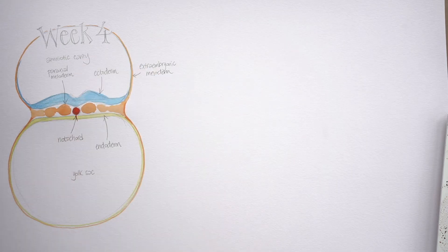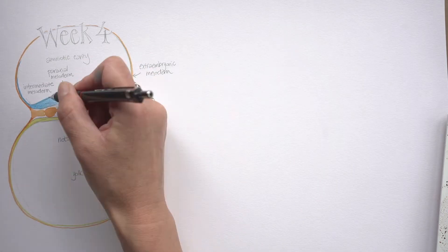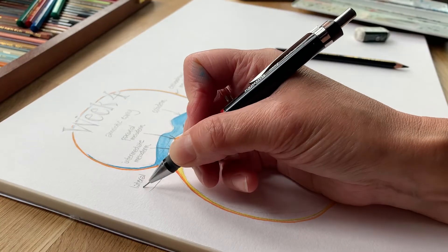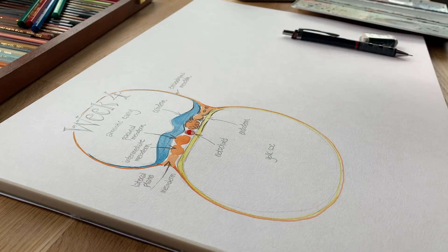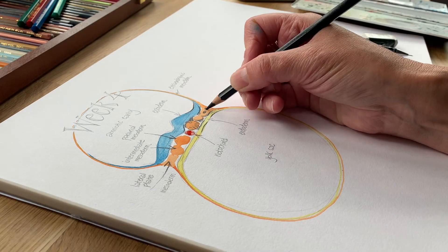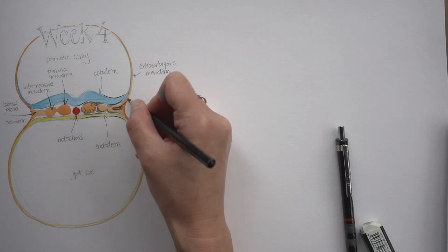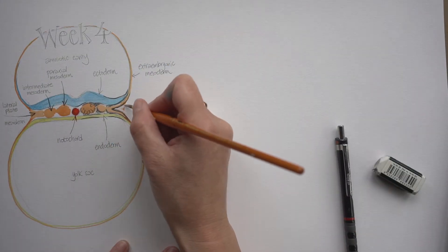That mesoderm in the middle starts off being quite a loose, fluffy tissue, but then it begins to consolidate into a sausage of tissue lying either side of the notochord called the paraxial mesoderm. Then just beyond that is another sausage called the intermediate mesoderm. Moving towards the edges of the jam sandwich, we've got the lateral plate mesoderm, and you can see here that starting to cavitate a bit, and then actually that pulls apart.